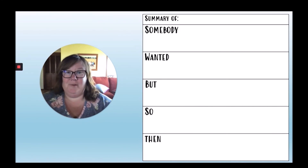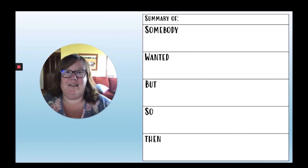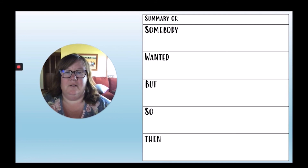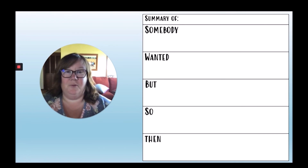Readers, now is when I want you to grab that piece of paper I talked about at the beginning of our lesson. Your job this week is to practice this strategy on your own. All I need you to do is write these words on your paper. You can draw lines to separate out the sections if you'd like, but you don't have to. At the top, write 'summary of' — this is where you would put the title of the story. Then write our words: somebody, wanted, but, so, then. Once you have these words written down, go find a story you would like to read, or revisit one you've read before. When you're done reading, think about each of these words to write a clear and concise summary of the story.